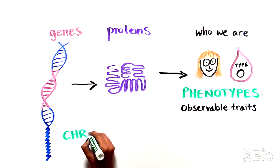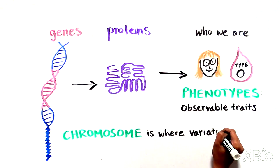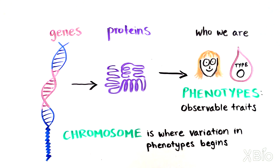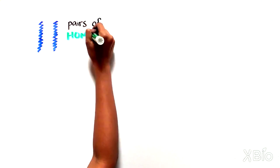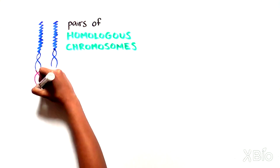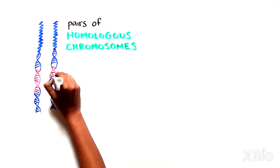Zooming back out to the chromosome level once again, we can start to understand where variation in human phenotypes begins. As humans have pairs of homologous chromosomes, it follows that they also have pairs of genes.